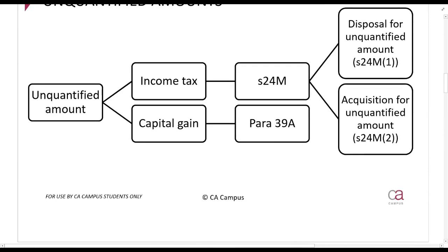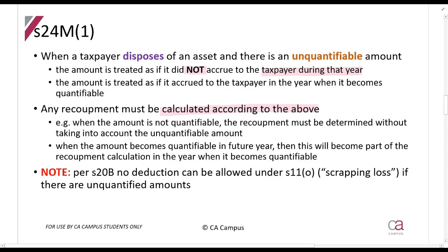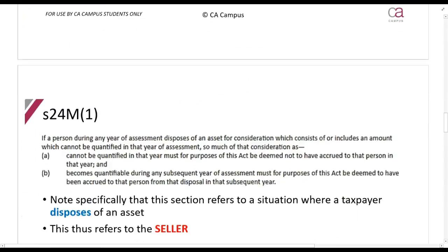The unquantified amount is discussed in two places: the income tax effect — recoupments and capital allowances — discussed in Section 24M; and the capital gain effect, discussed in Paragraph 39A. For the income tax effect, when a taxpayer disposes of an asset and there's an unquantified amount, that amount is treated as if it did not accrue to the taxpayer during that year. It is treated as accruing in the year when it becomes quantifiable, and any recoupment must be calculated accordingly.